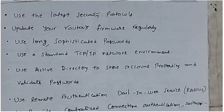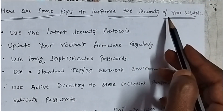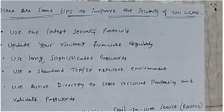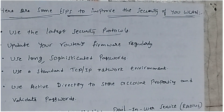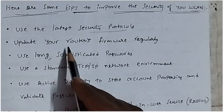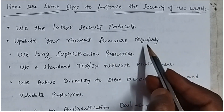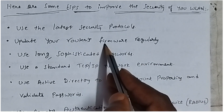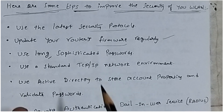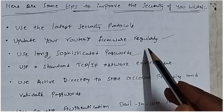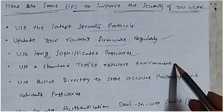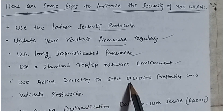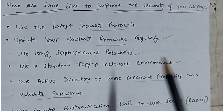Here are some tips to improve security in your wireless LAN. Use the strongest security protocol, meaning you should use a strong Wi-Fi password. Update your router's firmware regularly. Use long and sophisticated, more complex passwords. Use a standard TCP/IP network internet. Use Active Directory to store account properties and validate passwords.